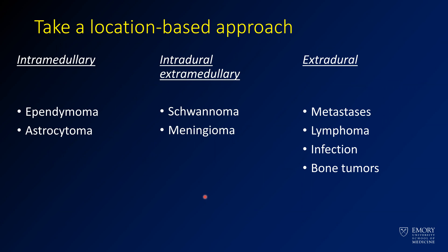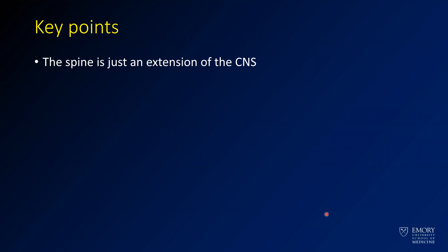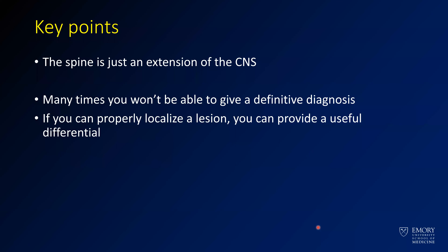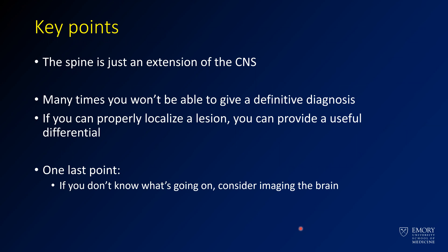In summary, take a location-based approach. If intramedullary, think ependymomas or astrocytomas. If intradural extramedullary, the most common are schwannomas and meningiomas. If extradural, there's a broad differential: bone tumors, metastases, lymphoma, and all of those things. Think about the spine as an extension of the CNS. Many times you won't be able to give a definitive diagnosis, but if you can localize the lesion, you can give a very useful differential. If you're completely at a loss, think about doing a CT, or imaging the brain — a brain lesion that looks similar may give you a clue that you're looking at demyelinating disease, lymphoma, or a multifocal GBM.